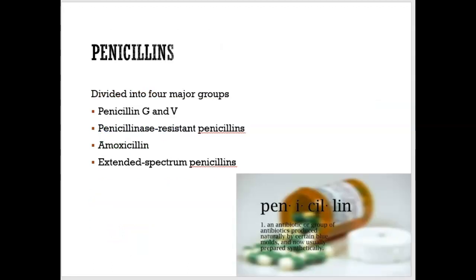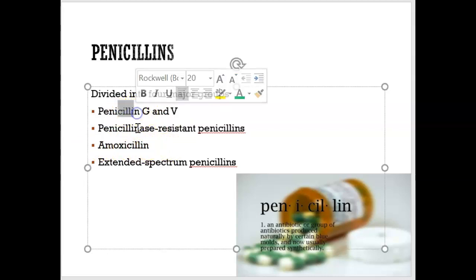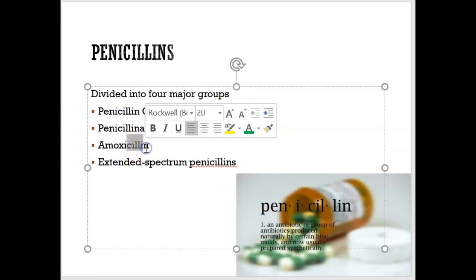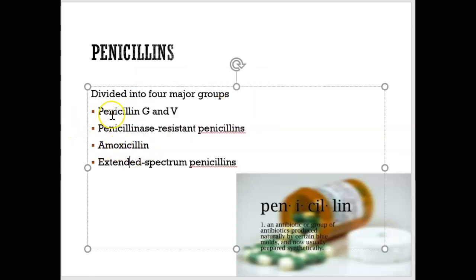The first antibiotic we're going to look at is penicillin — probably one you've heard of. There are many different types: penicillin G, which is usually administered intravenously, and penicillin V, which can be taken orally as a pill. Amoxicillin is a common one as well. If you notice the endings — amoxicillin ends similarly to penicillin — they come from the same family. When drugs have similar endings, there's a high chance they come from the same family.